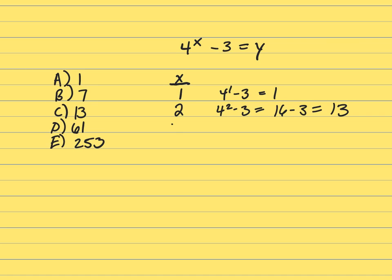All right, let's try 3. 4 to the 3rd minus 3. Well, that's going to be 64 minus 3, which is 61. Well, we're just getting bigger and bigger, so your answer has to be B. It can never be 7.